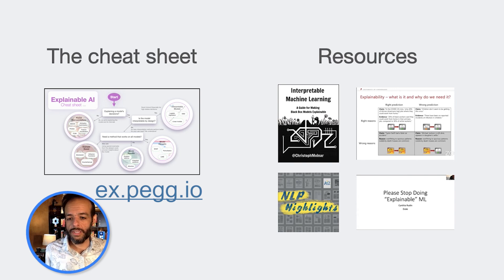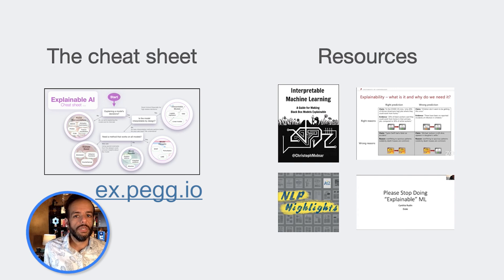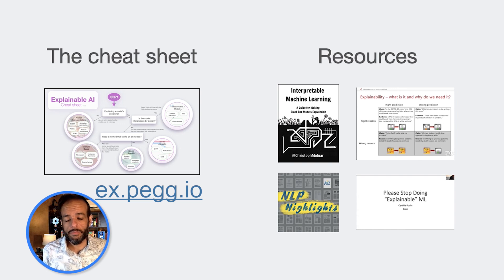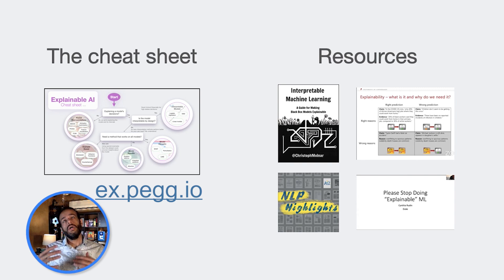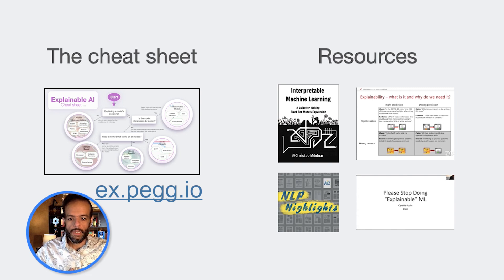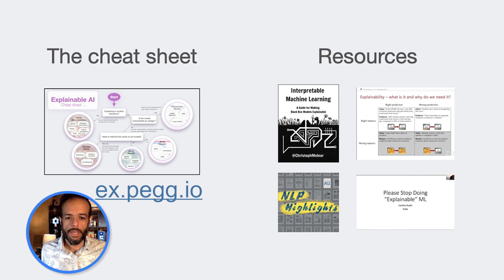This concludes the quick look at the Explainable AI cheat sheet — the first version. We'll keep updating it, and you can find it at x.pedge.io. Some very interesting resources include the Interpretable Machine Learning book by Christoph Molnar — there's a free online version linked below. Most of these groups have dedicated chapters in the book, and the author explains each method along with its advantages and disadvantages.